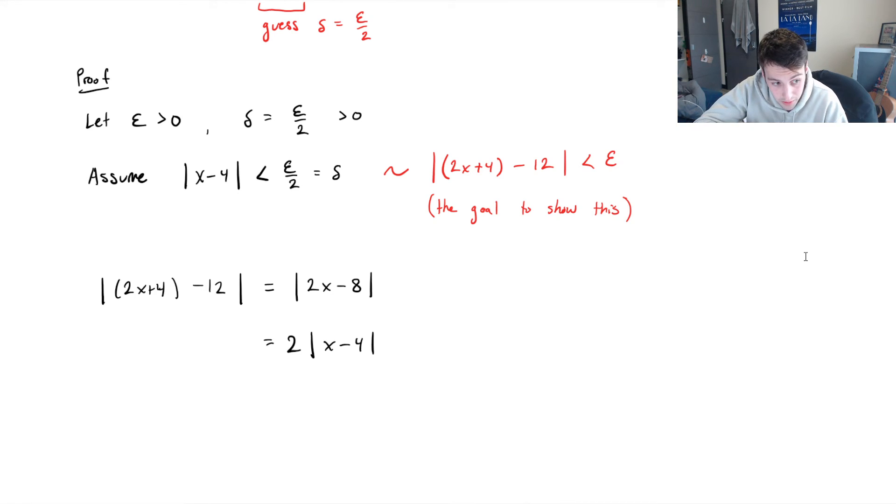So what we've written, what we started with, so we now know that what we got, 2 times absolute value of x minus 4, well that has to be less than epsilon, right? From the assumption. But 2 times the absolute value of x minus 4, remember what we started with? We started with f of x minus the limit. So what we did, we just showed that the absolute value of f of x minus 12, the limit, is equal to, or is less than epsilon.